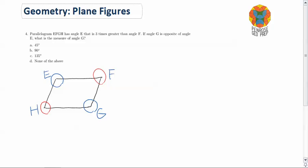We want to find the exact angle measurement of angle G. We know that angle G must be the same as angle E because it is directly opposite of angle E. However, we don't exactly know what angle E is, we only know that it's 3 times greater than angle F.